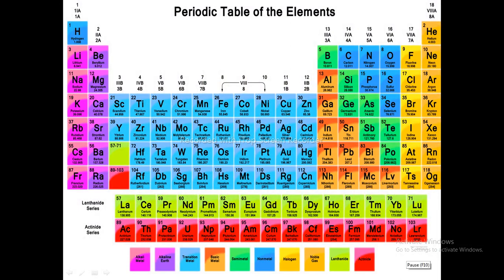In the modern periodic table, very active elements are kept in group 1 and are called alkali metals. Very reactive non-metals are kept in group 17 and are known as halogens. Noble gases are arranged in group 18. Similarly, alkaline earth metals are kept in group 2 and chalcogens are kept in group 16. All metals are at the extreme left and non-metals are arranged in the extreme right. Lanthanides and actinides are kept below in the f block. In the modern periodic table there are altogether 18 groups (vertical columns) and seven periods (horizontal rows).